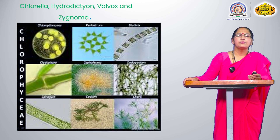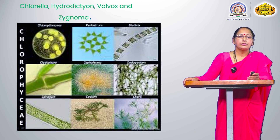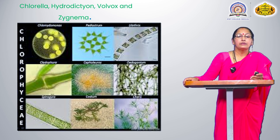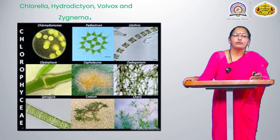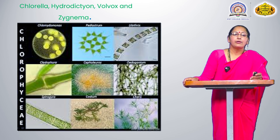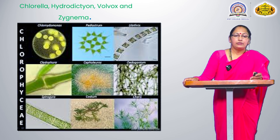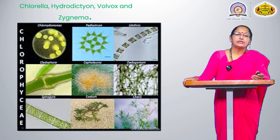Flagella are present — one or many flagella are present in the gametes of Chlorophyta. Good examples are Chlorella, Hydrodictyon, Volvox, Zygnema, Spirogyra, and Pediastrum. Many forms are present in the Chlorophyceae group of the Chlorophyta class.